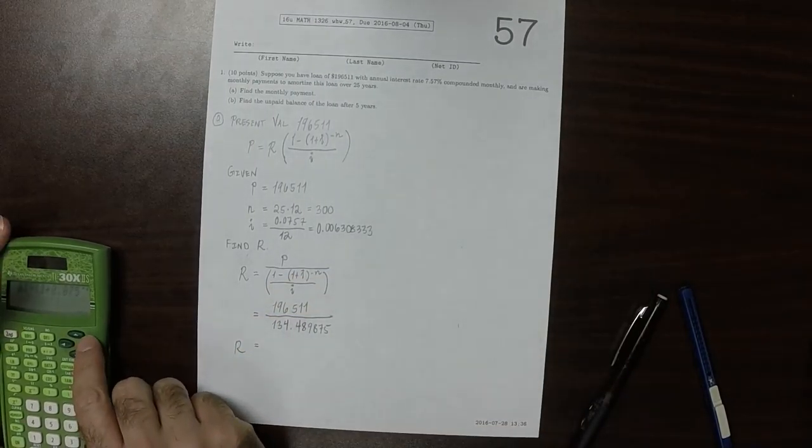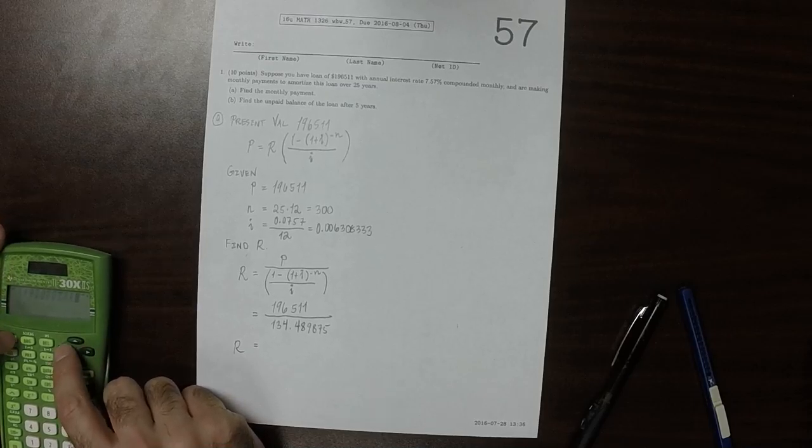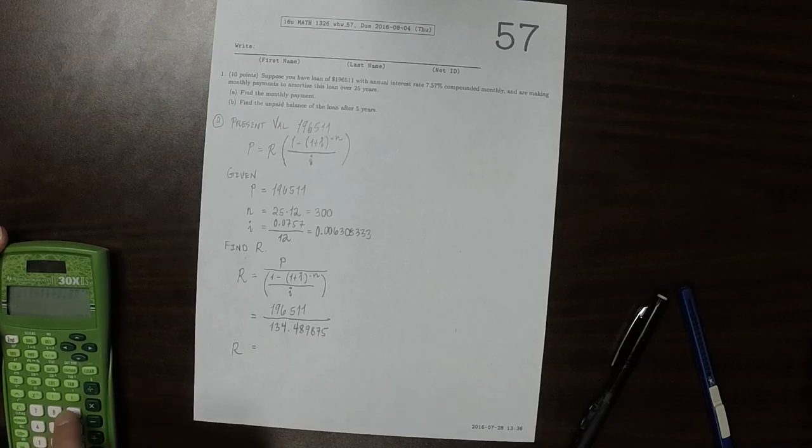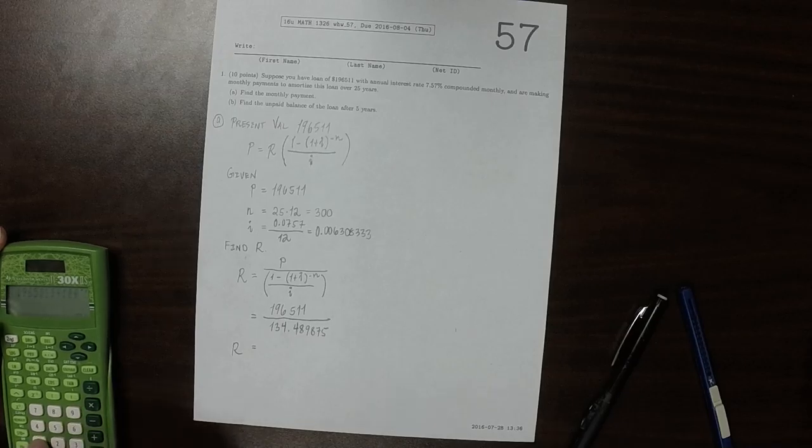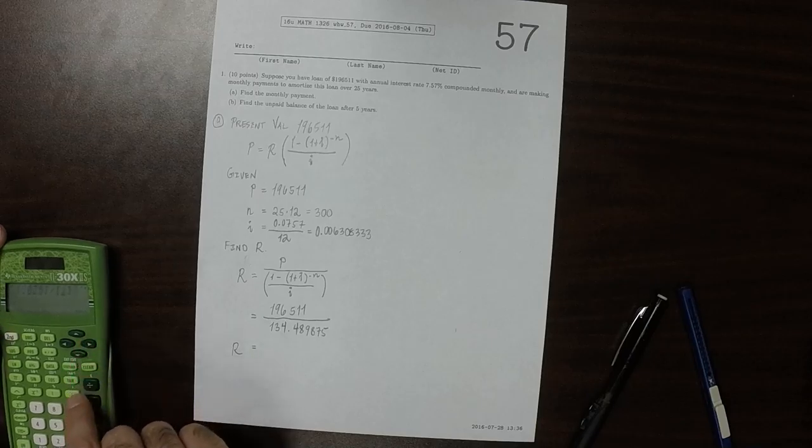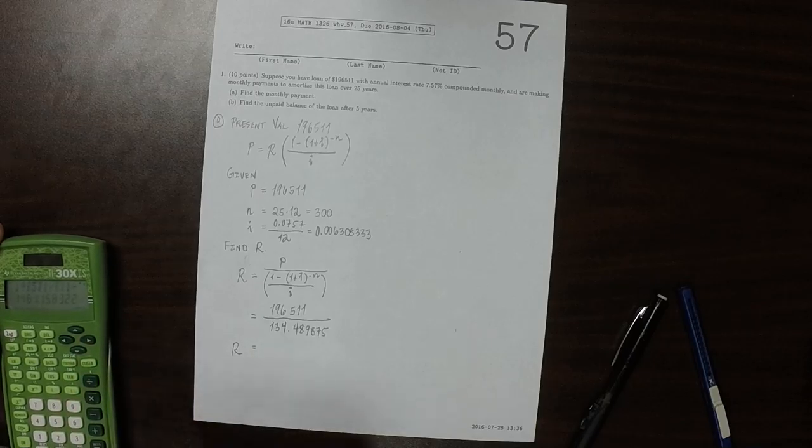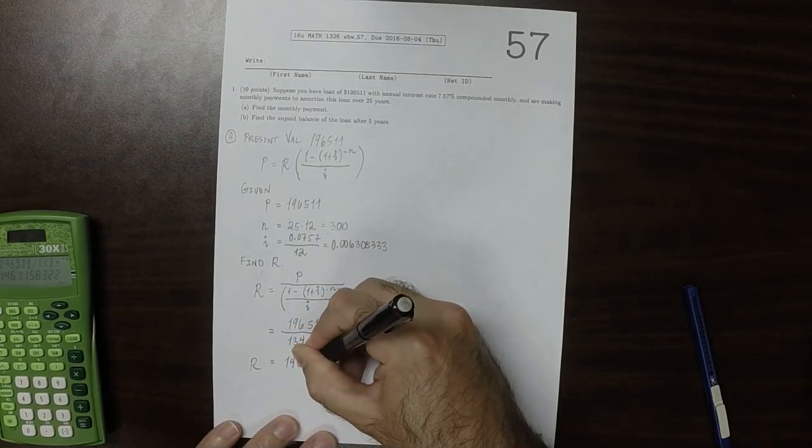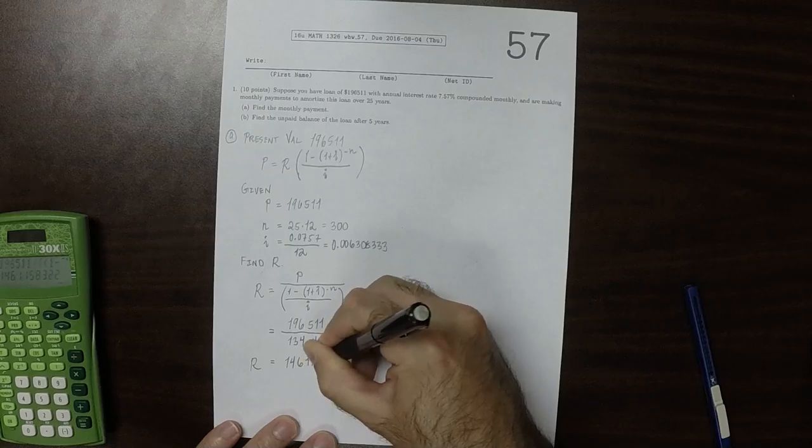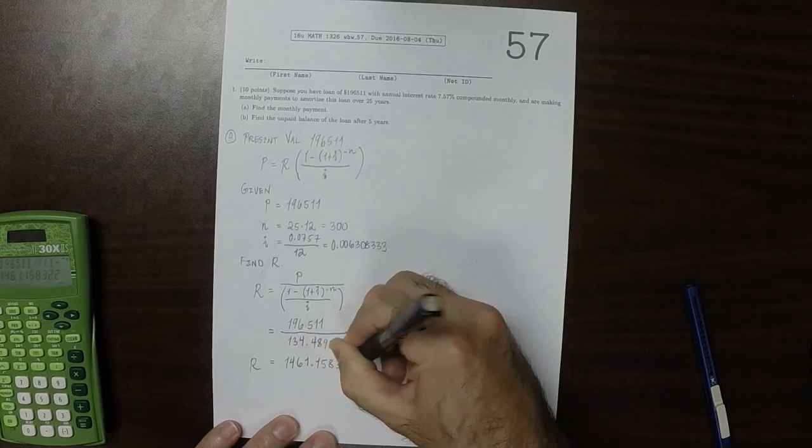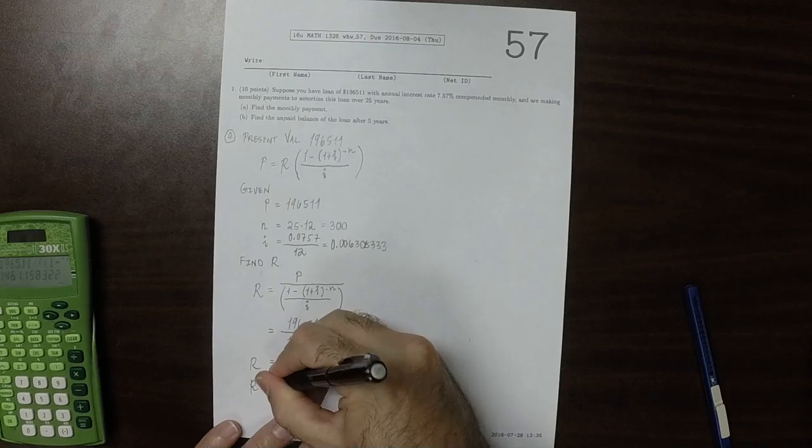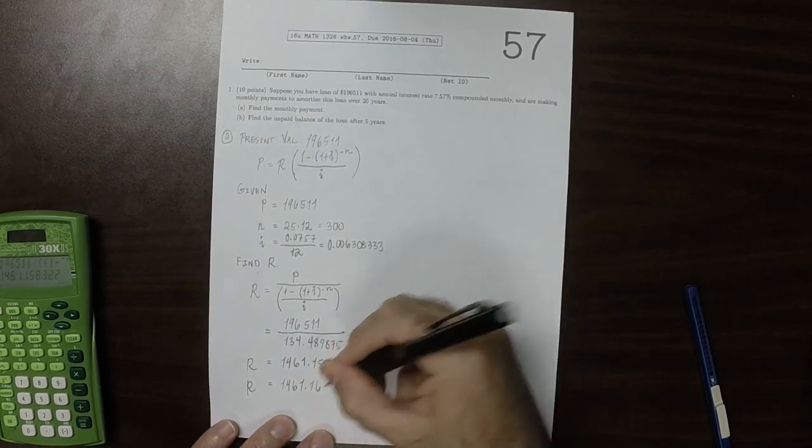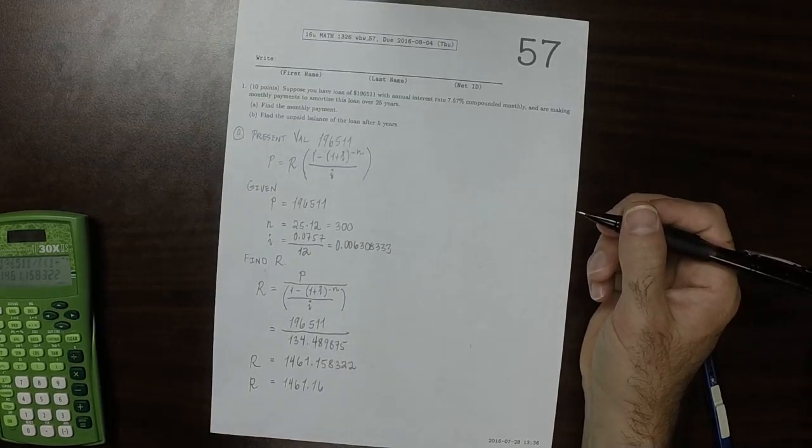So that number is 196,511 divided by that 134 number. That would be $1,461.16. So about $1,500 per month.